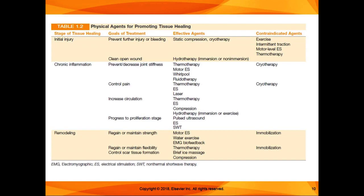For preventing further injury or bleeding, static compression or cryotherapy is indicated. For an open wound, hydrotherapy can be used, though it won't be a main focus for this class. Contraindicated in initial injury: exercise, intermittent traction, motor-level electrical stimulation — because we don't want muscles contracting and causing further injury — and thermotherapy, because we want to decrease circulation, not increase it.